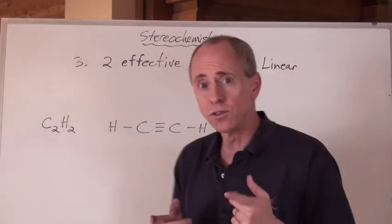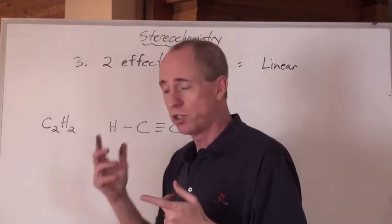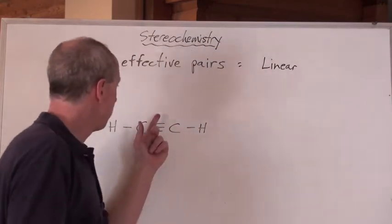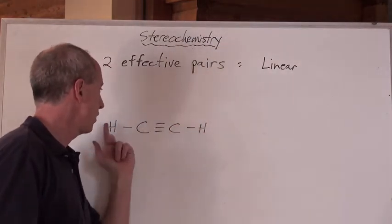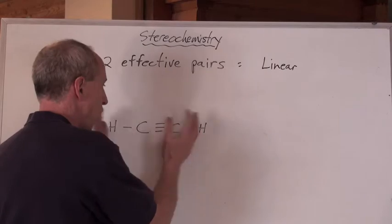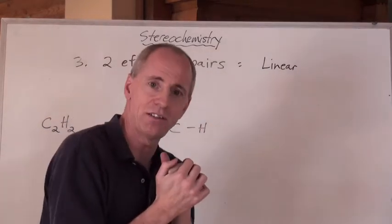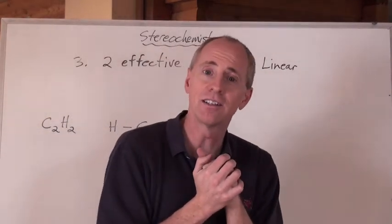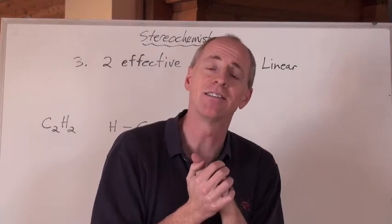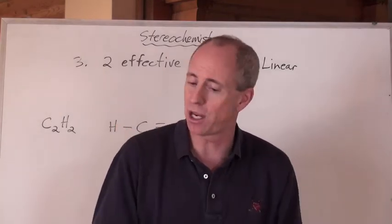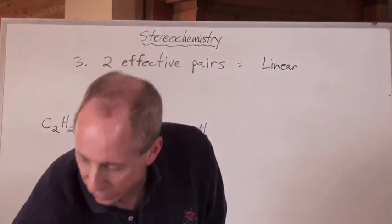When you draw that Lewis diagram for this, what you're going to get is a triple bond between the two carbons, single bonds to the hydrogens. What's the farthest that you can spread this out in terms of VSEPR theory? Well, it looks like it's a linear molecule, and it is. It's a linear arrangement and a linear shape, and you always get linears when you have two effective pairs.